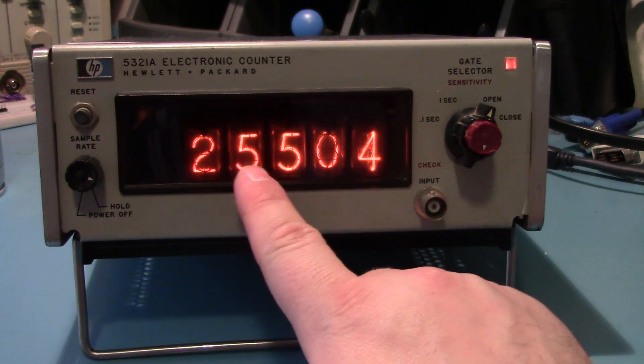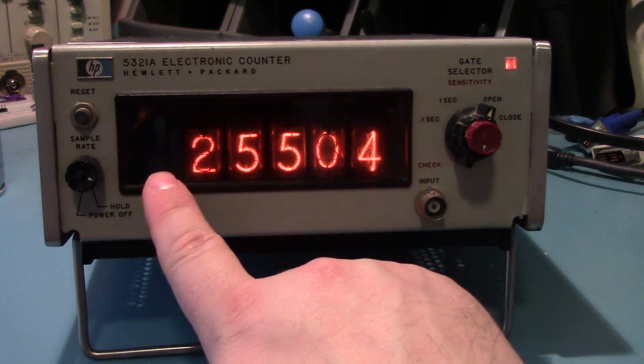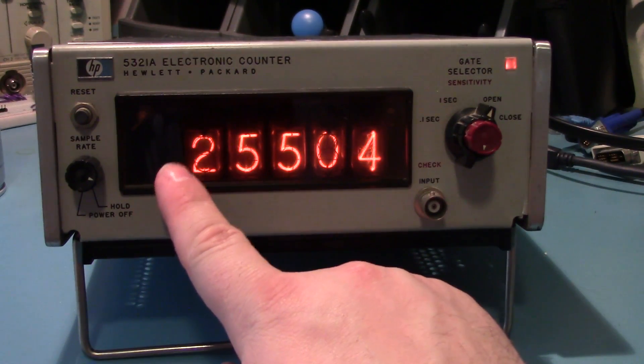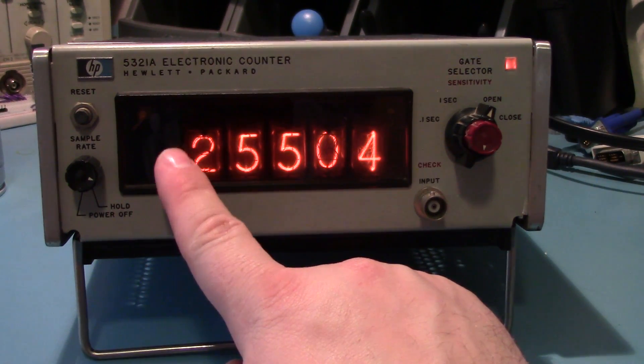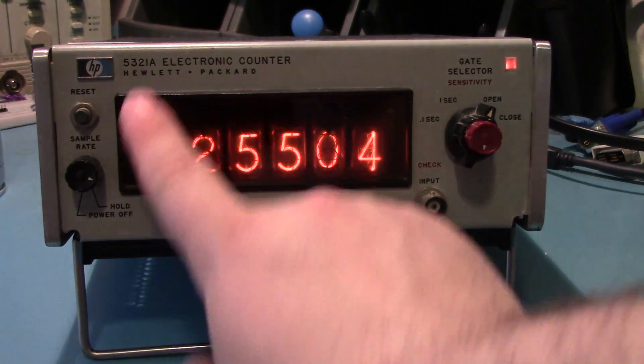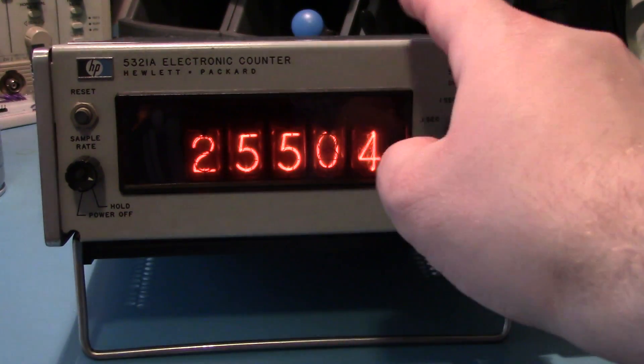Like I said, this uses Nixie tubes. There's five of them. There isn't actually a sixth one. My understanding is there is actually a model that has the sixth one, like the B or whatever, or I think it's an option for this one.